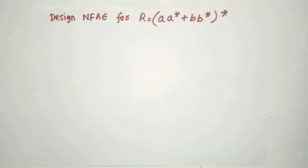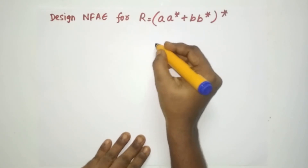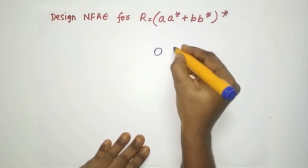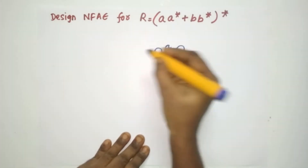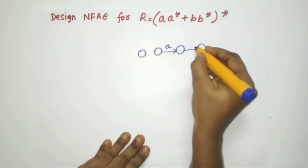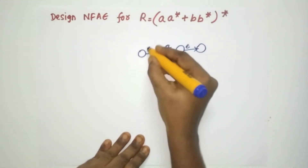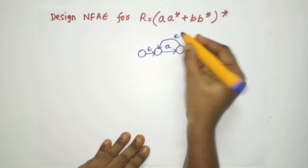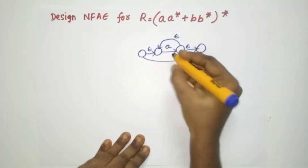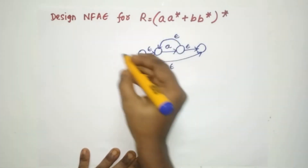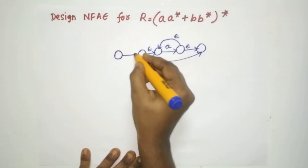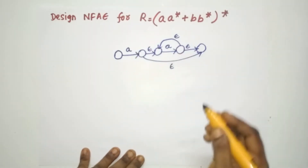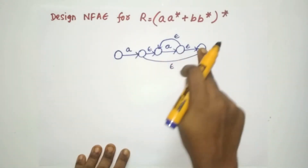We are going to create A* first, which will be on the top. For A*, create initial and final states with an A-transition, then add a new initial and new final state with Epsilon transitions accordingly — as covered in the previous video. This gives us A*. Then, adding a state with an A-transition before it gives us A·A*.